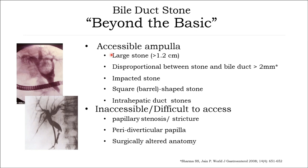Stones beyond basic removal include: inaccessible ampulla if stone is more than 1.2 cm, disproportion between stone and bile duct more than 2 mm, impacted stone, square- or barrel-shaped stone. Difficult access situations include papillary stenosis or strictures, periampullary diverticular papilla, and surgically altered anatomy.